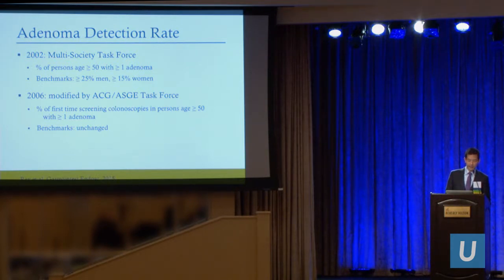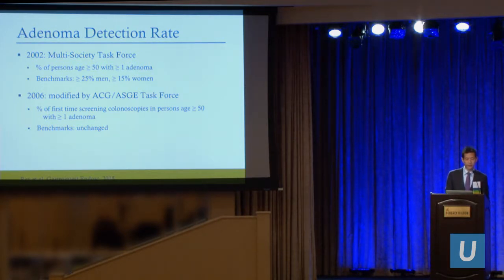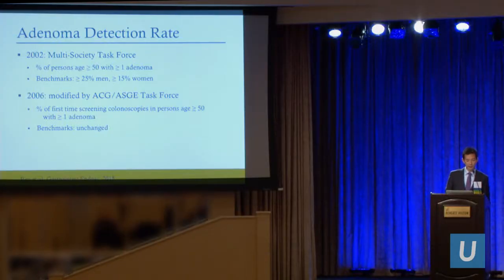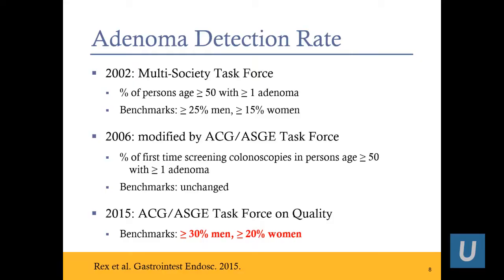In 2006, the ACG and ASG had a task force that redefined ADR as the percentage of first-time screening colonoscopies in persons age greater than 50 with at least one adenoma. They removed surveillance colonoscopies because those patients had a much higher rate of polyps, but kept the benchmarks unchanged: still 25% for men and 15% for women, just for screening colonoscopies.